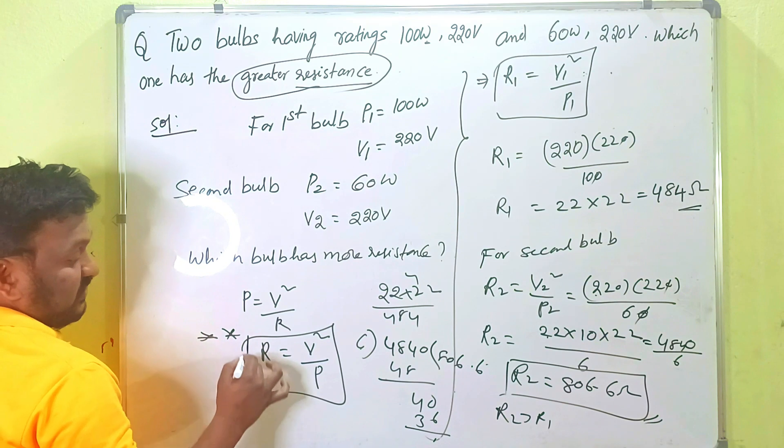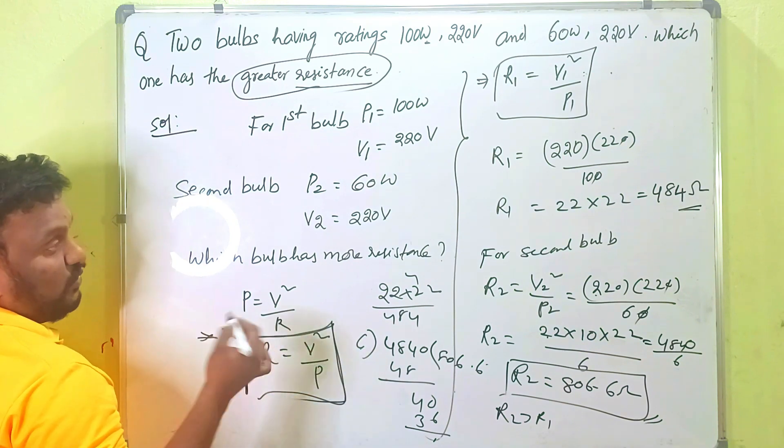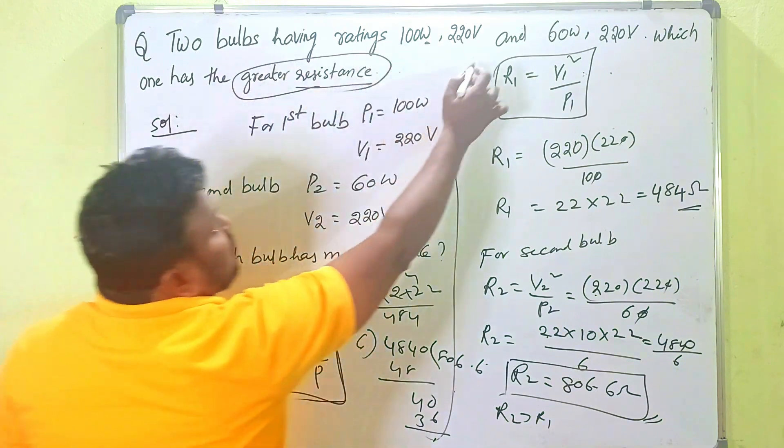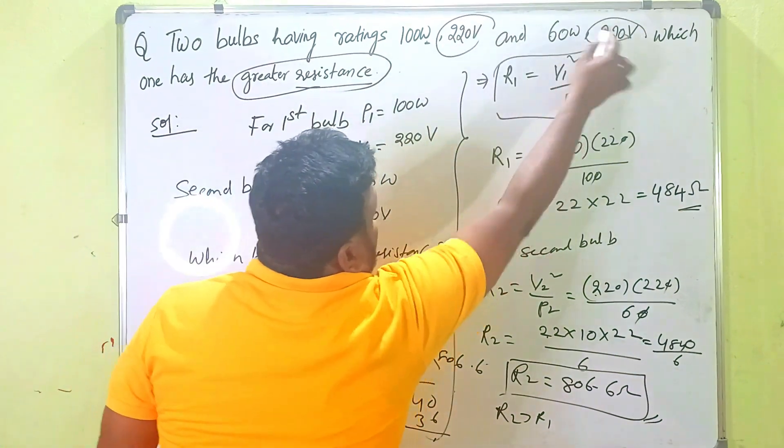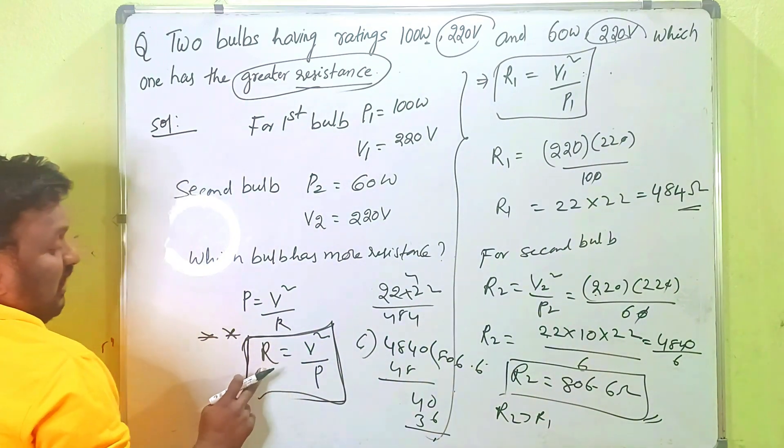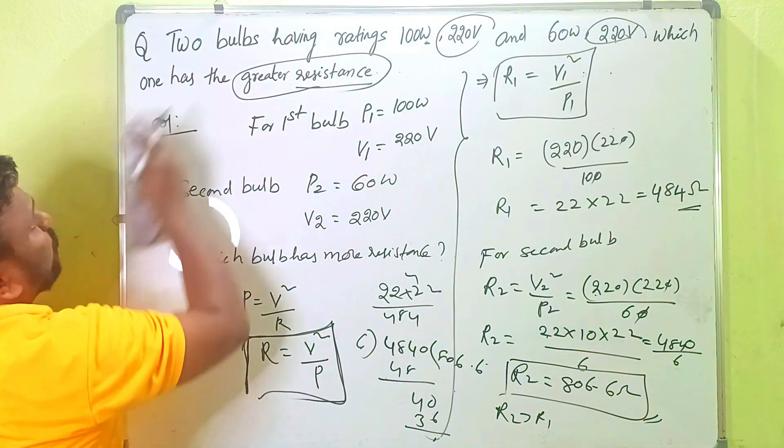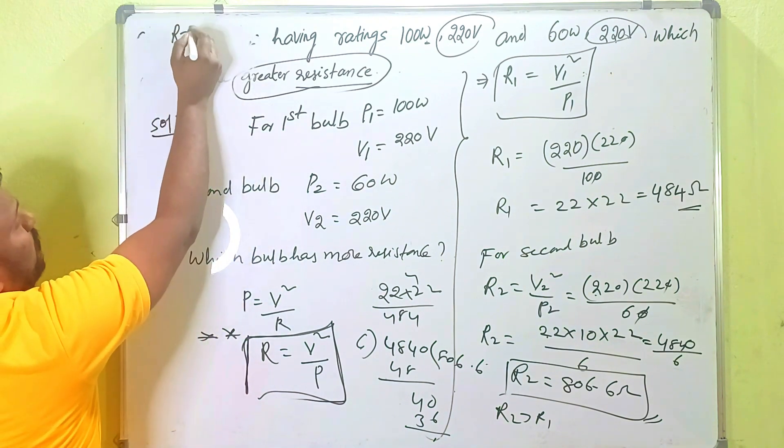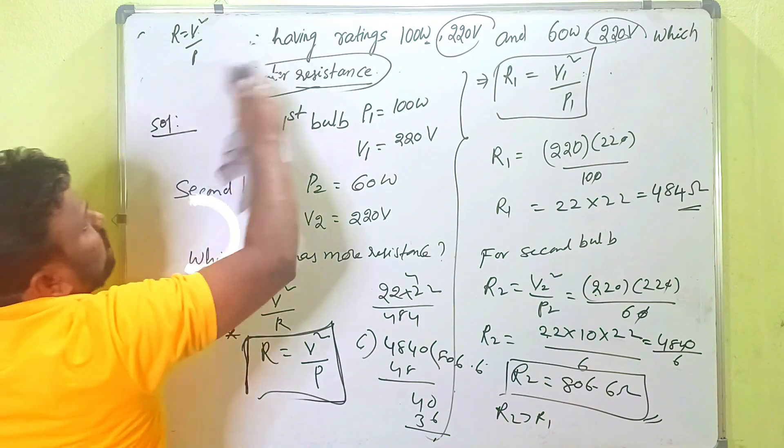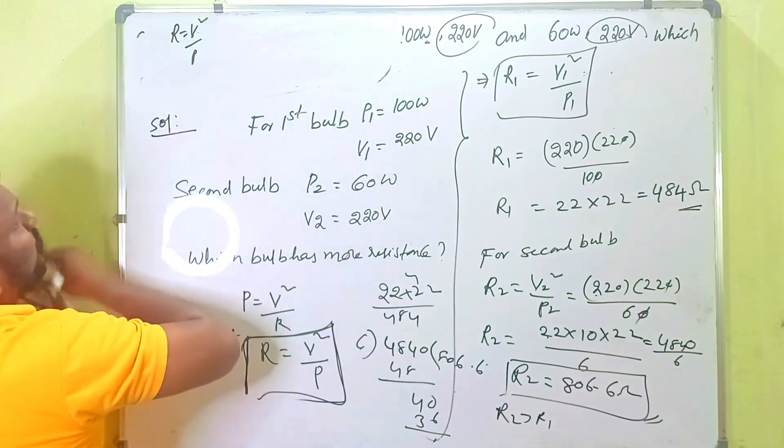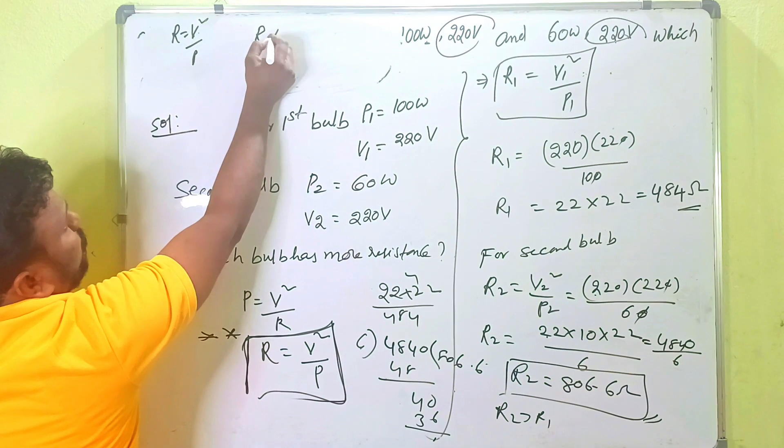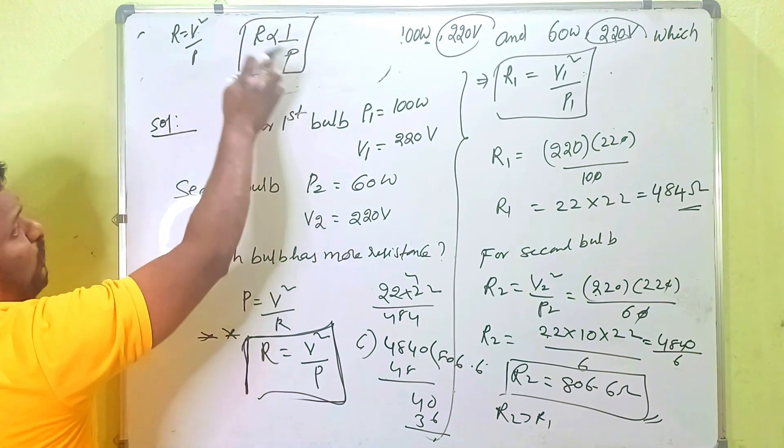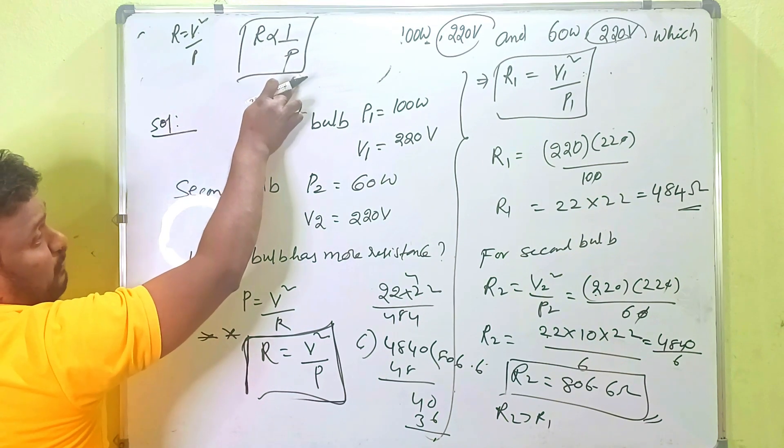220 is constant here. For both bulbs, potential is constant. Here, from this formula, R is equals to V square by P. It means that V square by P. When V is constant, what is it? R is proportional to 1 by P. R is proportional to 1 by P. How these two are? Inversely proportional.